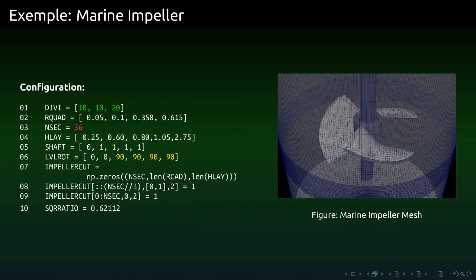Let's look at an example quickly. This is the basic configuration which generates a marine impeller. That's where the name of the script came from. For this configuration we set 10 radial divisions, 10 divisions per quad and 20 divisions actually per level. For the number of little circles, we have RQuad. The first one is the radius of the shaft. The second one is the radius of the first part of the impeller. The third is the radius of the impeller. And the last is the radius of the vat.